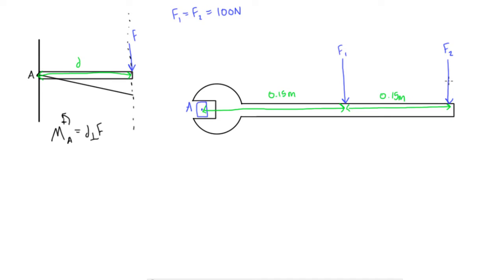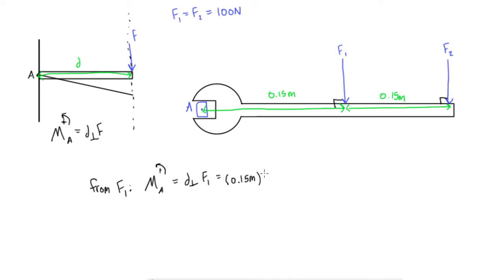Which one is going to cause a bigger moment? It'll be F2 — actually twice as big. For F1, the moment about A, with counterclockwise as positive, equals d_perp times the magnitude of F1: 0.15 meters times 100 newtons, which equals 15 newton meters. This force by itself causes a negative 15 newton meter moment about point A — it's negative because we defined counterclockwise as positive, and this force would cause clockwise rotation.